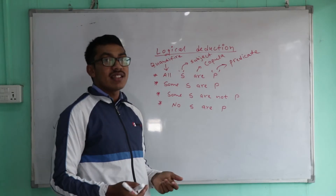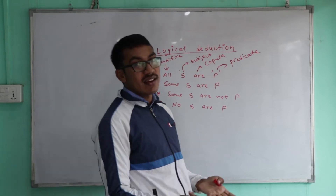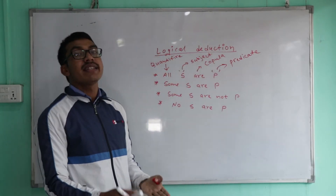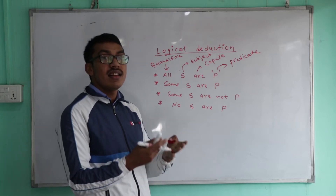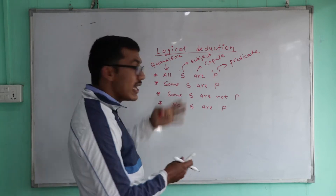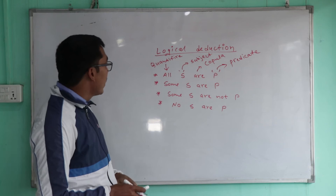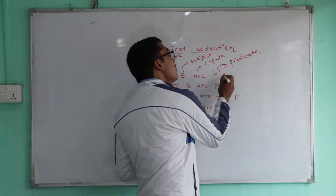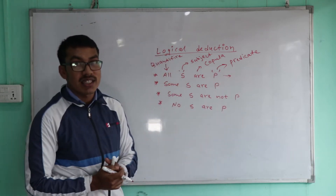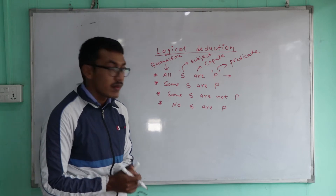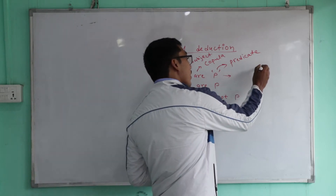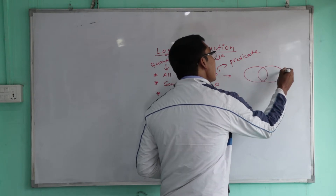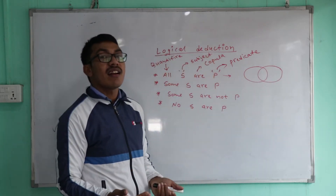In 15 to 20 seconds, if you look at this statement logically — right or wrong — you can do analysis. For this, we use Venn diagrams. So what do we do with a Venn diagram? Venn diagram is a tool for analysis.